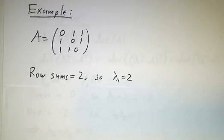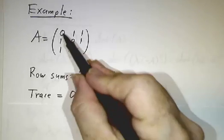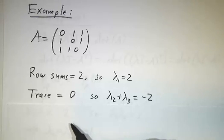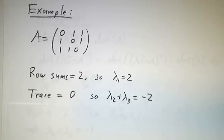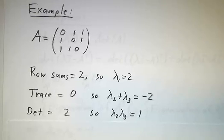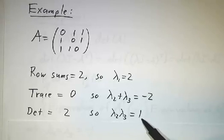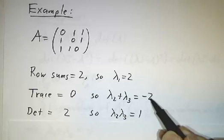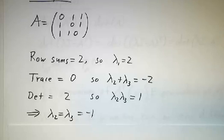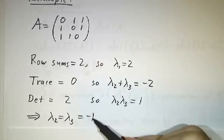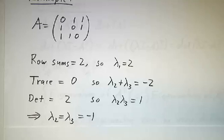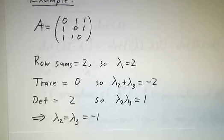Now we can use our other tricks to find the other eigenvalues. The trace is 0 plus 0 plus 0, so all the eigenvalues have to add up to 0. So 2 plus the other two eigenvalues is 0, meaning they add up to negative 2. The determinant is 2, so 2 times λ2 times λ3 equals 2, meaning λ2 times λ3 equals 1. The only numbers that multiply to 1 and add to negative 2 are negative 1 and negative 1. So eigenvalue 2 has multiplicity 1, and negative 1 has algebraic multiplicity 2 — and it turns out geometric multiplicity 2 as well, but that requires more work.